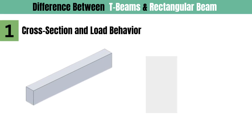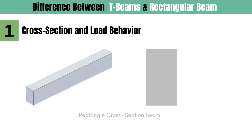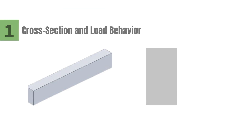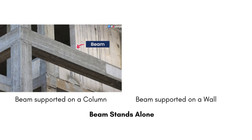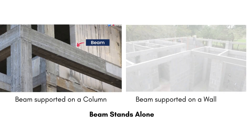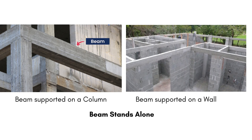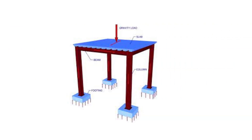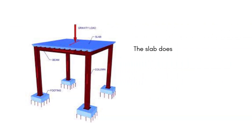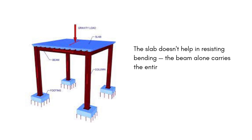A rectangular beam is exactly what it sounds like — a beam with a uniform rectangular cross-section. It's commonly used in residential buildings and low-rise structures because it is easy to form, easy to cast, and simple to design. However, in this setup, the beam and the slab act independently; the slab coming over the beam doesn't help in resisting bending. Therefore, the beam alone carries the entire load coming over it.